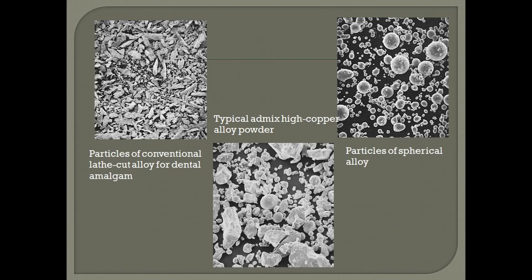Based on the particle size, amalgam alloys can also be classified as lathe cut alloys, spherical alloys, and a mixture of both known as admixed alloys. The lathe cut alloys are formed by grinding in a milling machine and they have irregular size. Because of the irregular size, they require more amount of mercury to be added during manipulation.